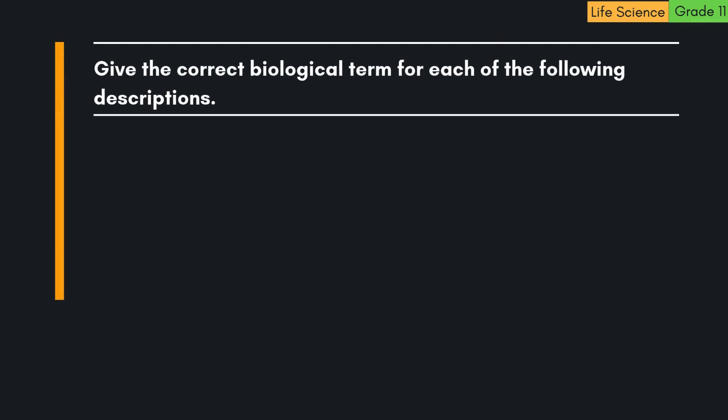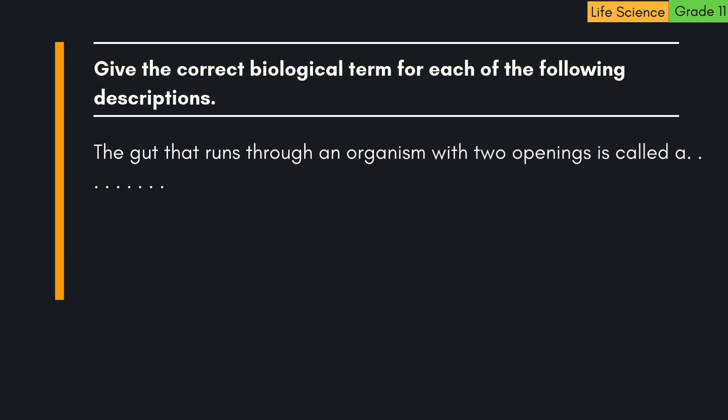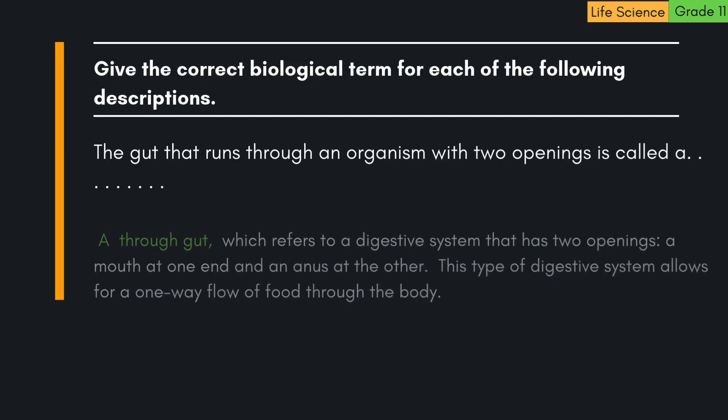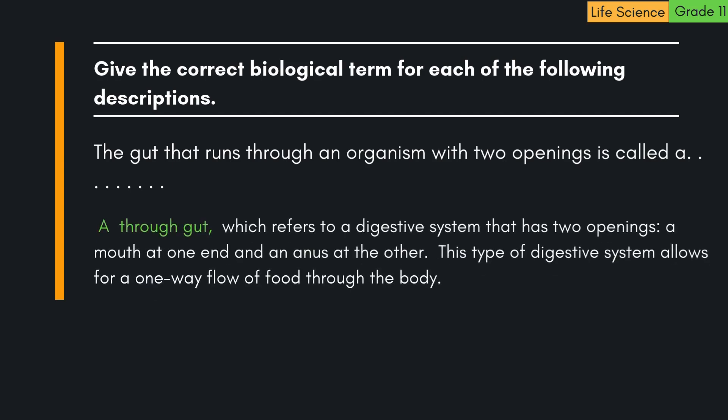Give the correct biological term for each of the following descriptions. The gut that runs through an organism with two openings is called a through gut, which refers to a digestive system that has two openings — a mouth at one end and an anus at the other. This type of digestive system allows for a one-way flow of food through the body.